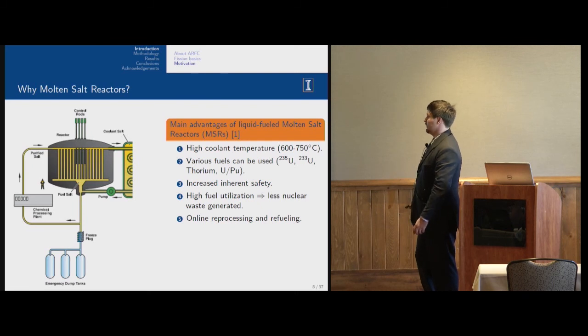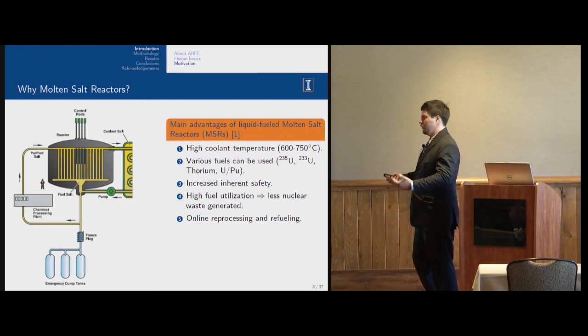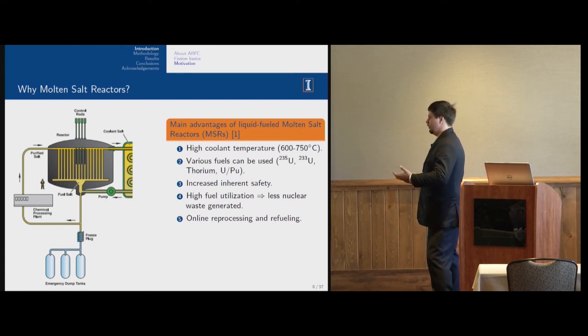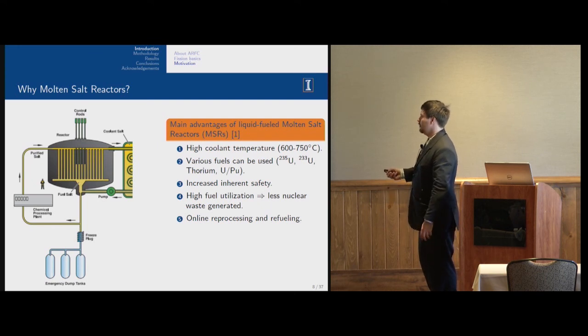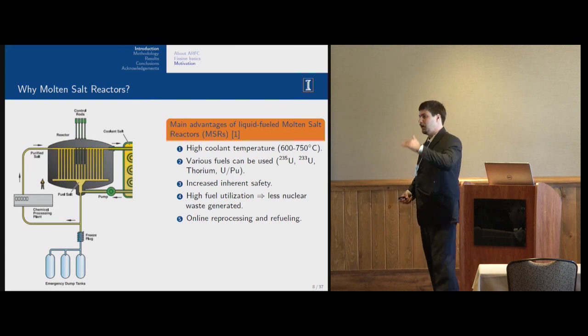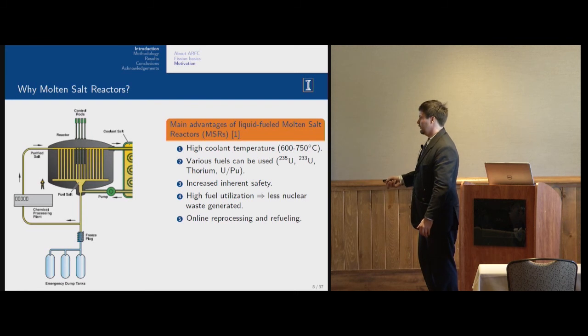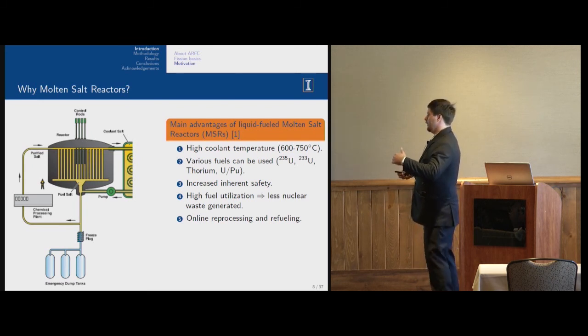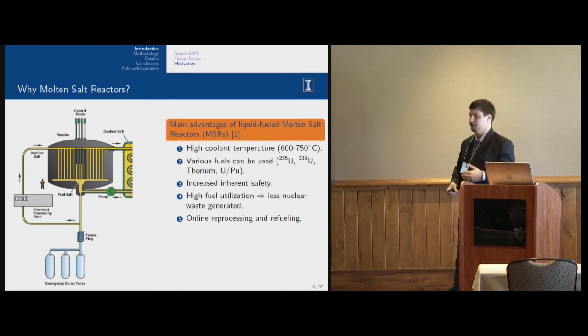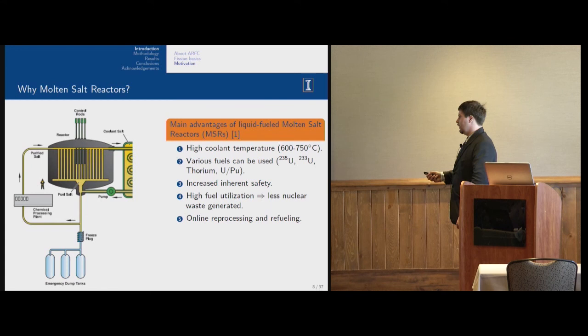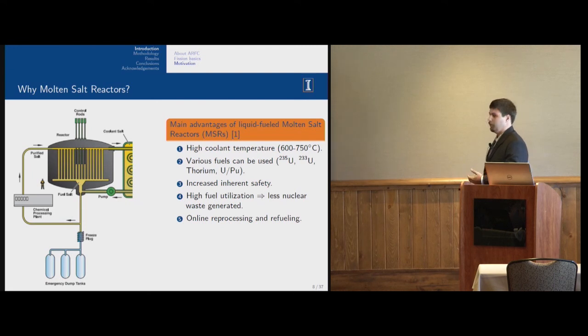It has increased inherent safety. Let's remember Fukushima, where we lost all our electric sources and we weren't able to cool our fuel. In this case, it's impossible because in case of emergency, we have a freeze plug here. If temperature rises higher than some value, it just drains into the tanks where it's subcritical. Moreover, we try to design these tanks so that it's possible to naturally remove all decay heat. We can add or remove isotopes or materials without stopping the reactor. There is really high fuel utilization, so we generate like an order of magnitude less nuclear waste.